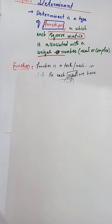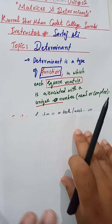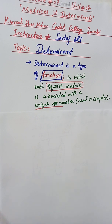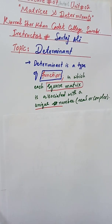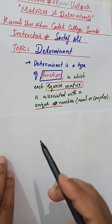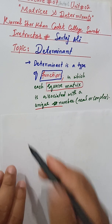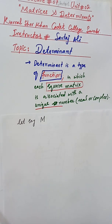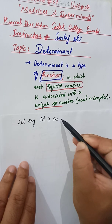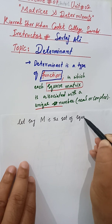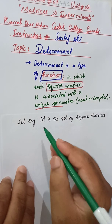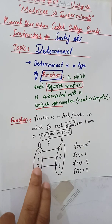Now moving to our topic: determinant is also a type of function. In the case of the determinant, the inputs are square matrices. Let M be the set of all square matrices.